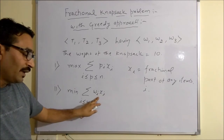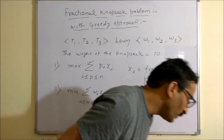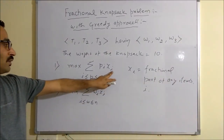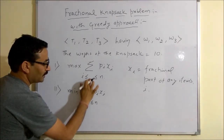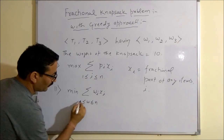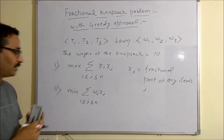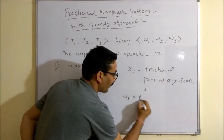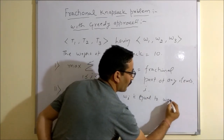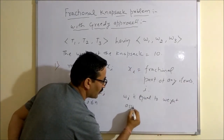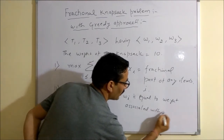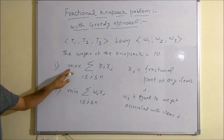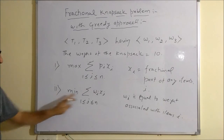Here, WI is the weight associated with item I. The constraint is that the sum of WI times XI must be less than or equal to the Knapsack capacity. Our main purpose is to maximize the profit and minimize the weight.